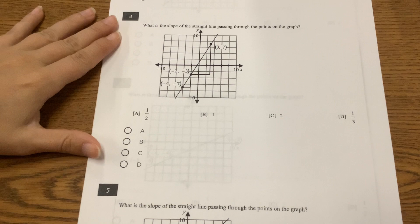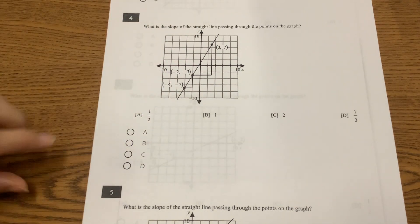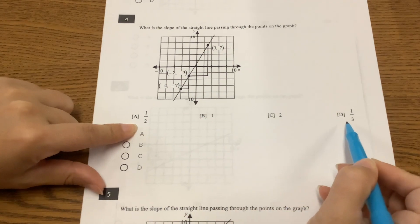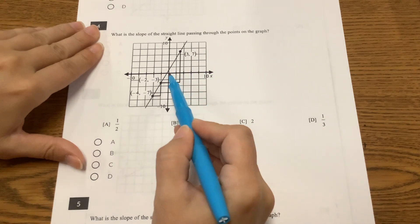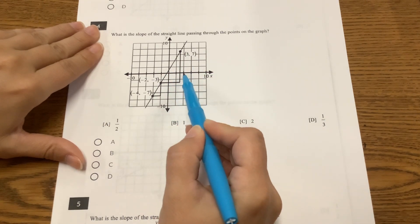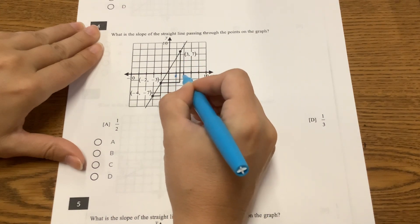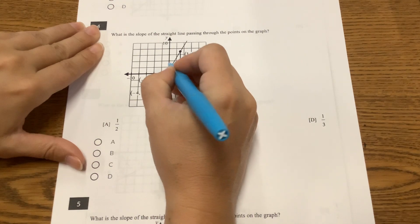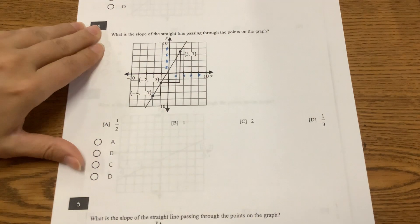So on number 4, it says, what is the slope of the straight line passing through the points on the graph? You have your answer choices; they're just giving you the slope value. If you look at this graph, the intervals here that are labeled are by 2. So this is 2, 4, 6, 8, and then 10. And the same thing moving vertically: 2, 4, 6, 8, 10.